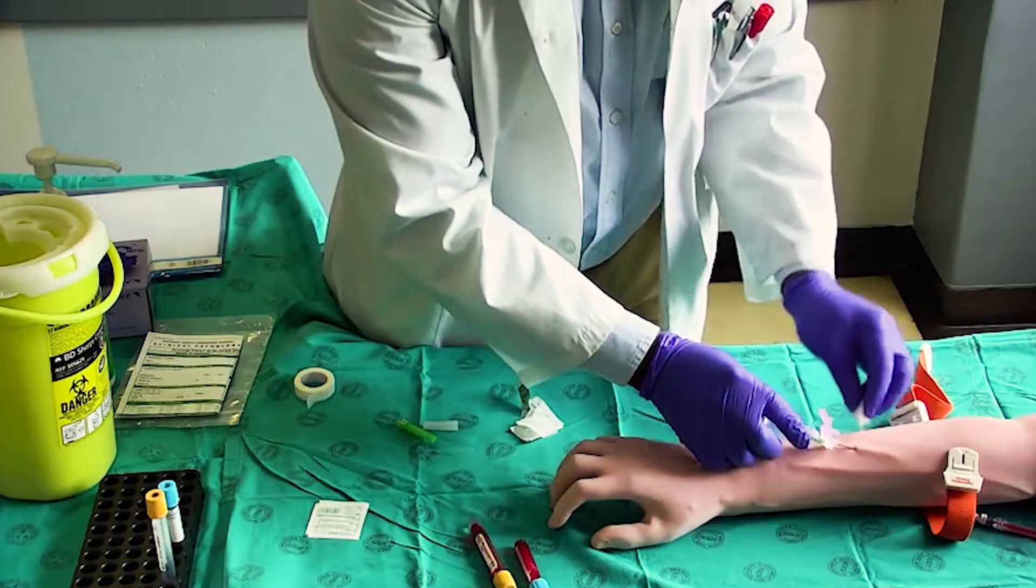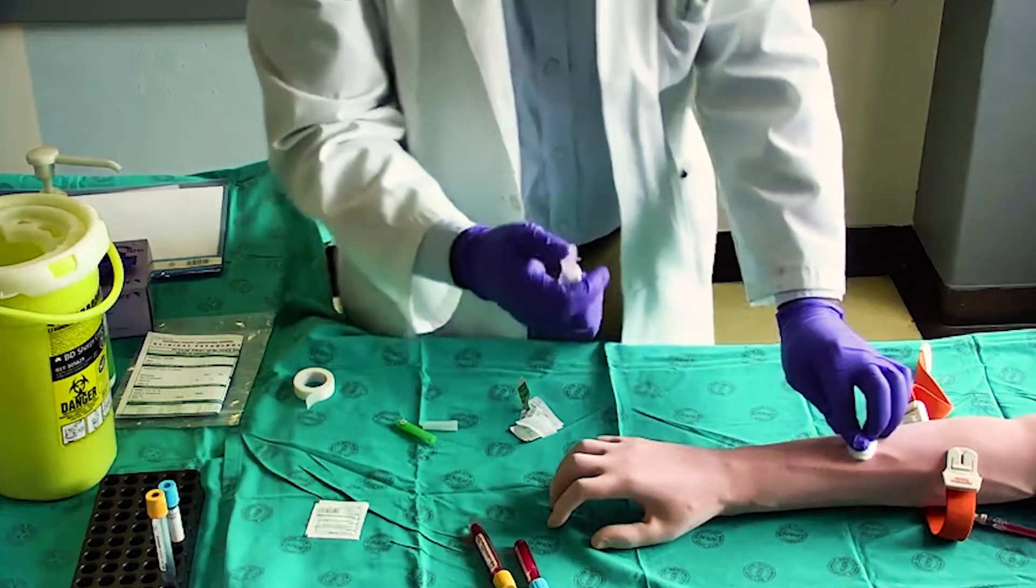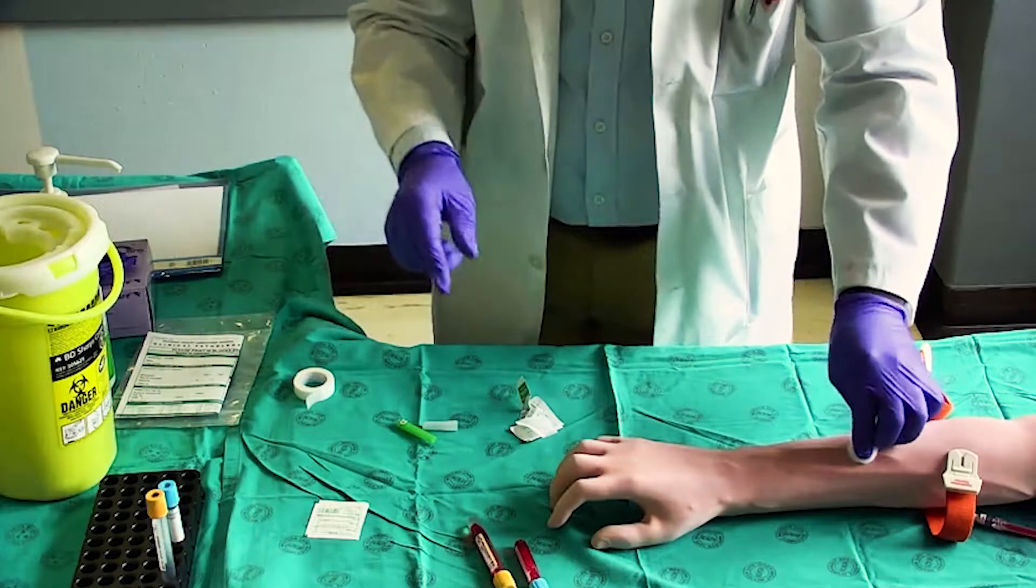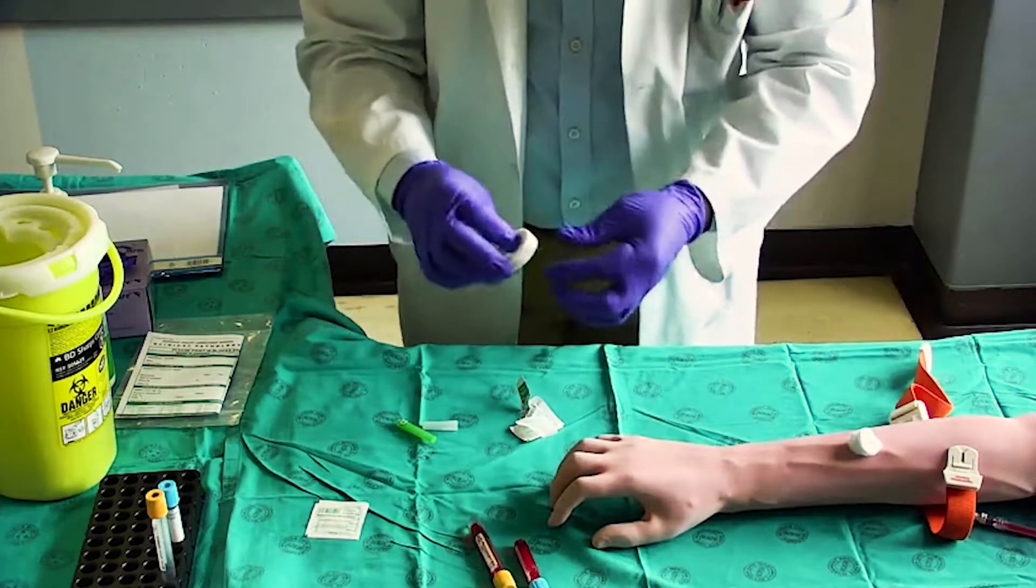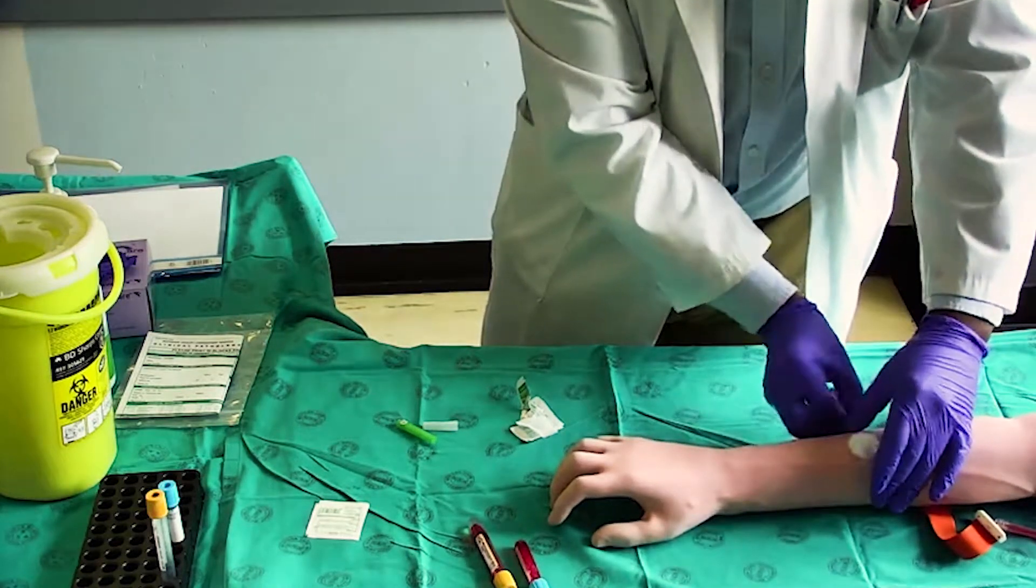Withdraw the needle gently and apply gentle pressure to the site with a dry, clean cotton wool ball. Discard the vacutainer needle together with the vacutainer barrel into the sharps container. Secure the cotton wool with tape.